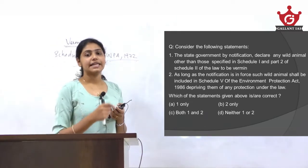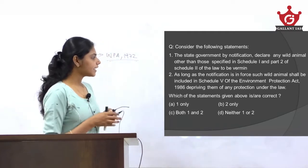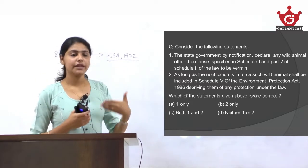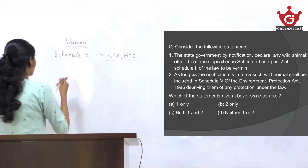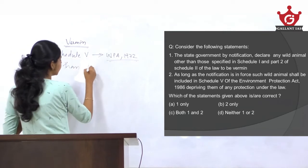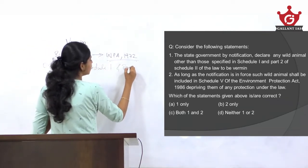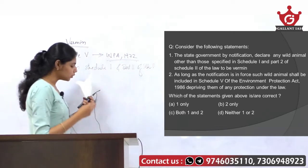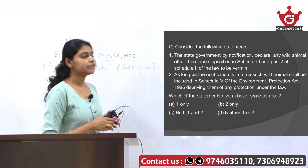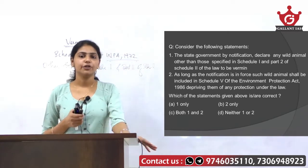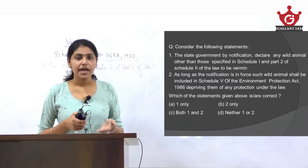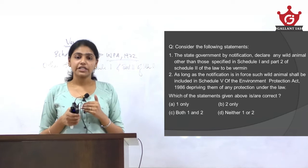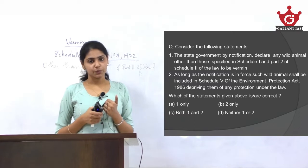So that selective slaughter can be performed on those animals. The central government by notification can declare any such wild animals — other than those specified in Schedule 1 and Part 2 of Schedule 2 of the Wildlife Protection Act 1972 — to be vermin for any selected area for a given period of time. As long as this notification is in force, these wild animals declared vermin will not receive any protection under the Wildlife Protection Act of 1972.